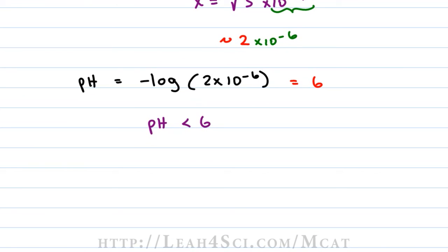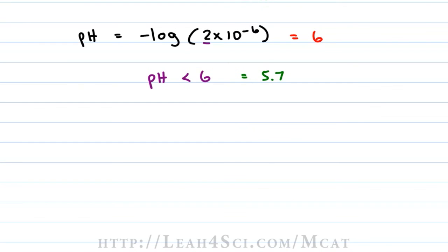If you have your log values memorized, you'll know that if it starts with a 2, you actually get a 0.7. What is a 0.7 slightly less than 6? 5.7. Just to show you how close we are, I punched this entire example into the calculator from the Kb to Ka conversion and I got a final answer of 5.63 for my pH.